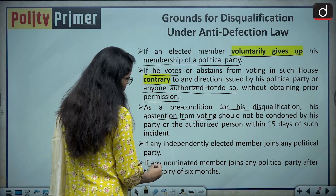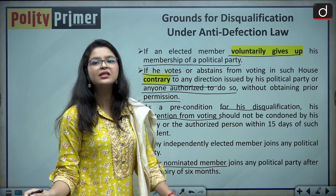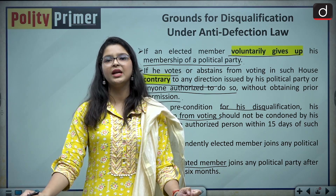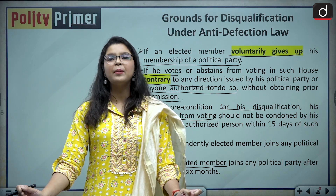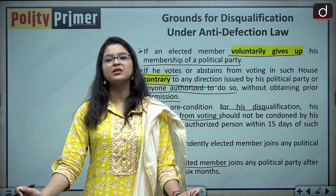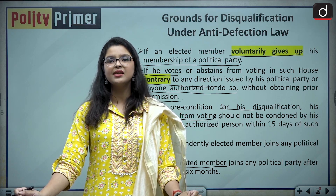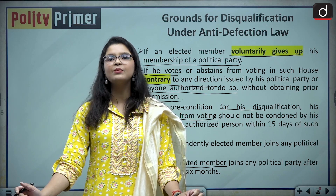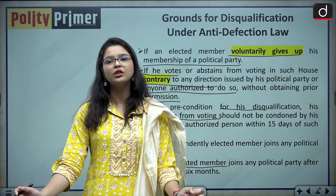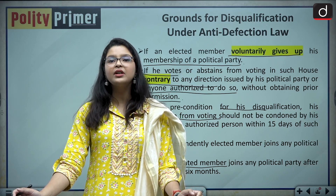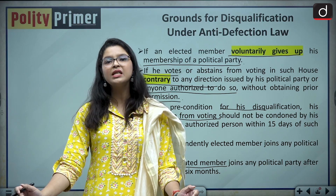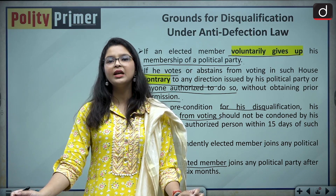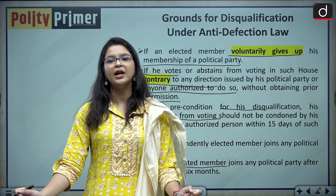The fourth ground is if any nominated member joins a political party after the expiration of six months from the date of his nomination. As we know, 12 members are nominated to the Rajya Sabha from fields such as literature, art, or social sciences. Six months' time is given to these members to subscribe to a political affiliation or join a political party. But after the expiration of six months, if they join a political party, they will be liable to be disqualified.